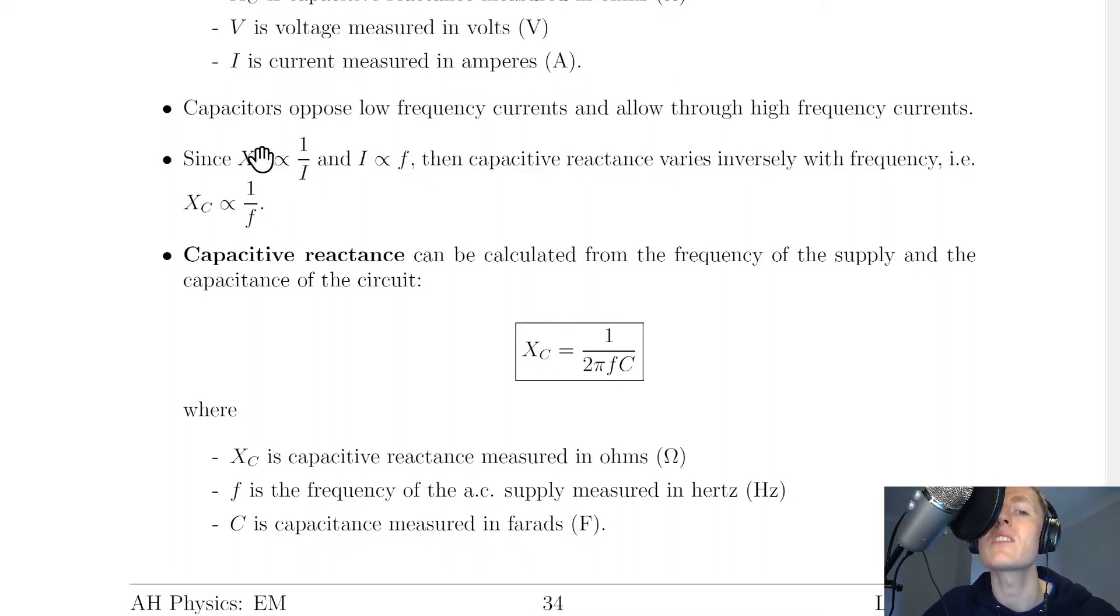And we can see this because we know that XC is related to current in this way, and current is related to frequency. So we can replace the current in here with the frequency F, and say that XC is proportional to 1 over F.